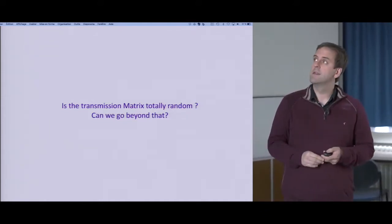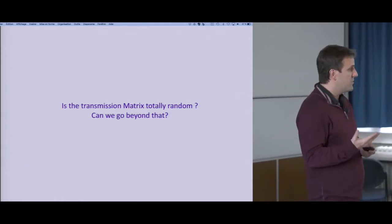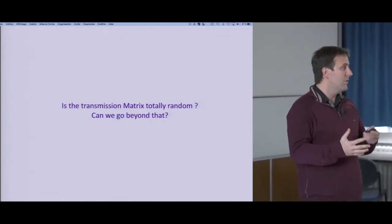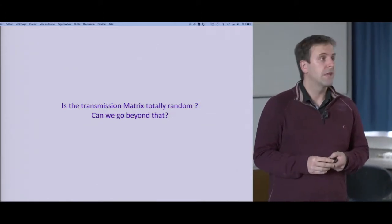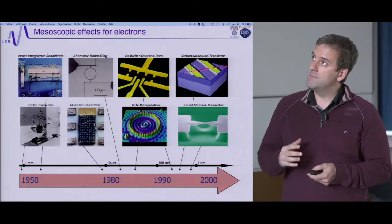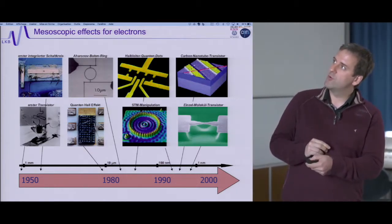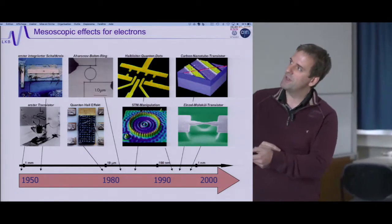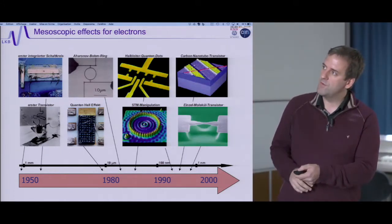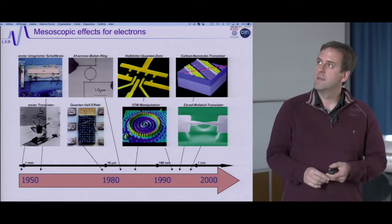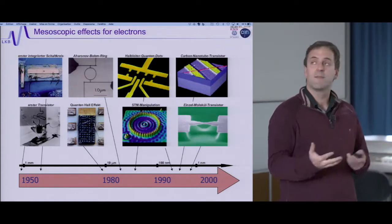Now I want to address: is the transmission matrix really random? Are there hidden correlations we can exploit? In electronic systems, from the 1950s to nowadays, there have been many interesting mesoscopic effects unraveled and exploited. If you go to the nanoscale with electronic systems and lower the temperature, you become sensitive to the wave behavior of electrons and see all these mesoscopic effects — single molecule transistors, observation of electron wavefunctions on surfaces, and so on.